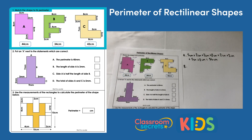Match the shape to its perimeter. We have three shapes A, B and C and we have three perimeters: 44 centimetres, 34 centimetres and 42 centimetres. I've already made a start on this question so I can talk you through the process so far and then we can carry on and get the final answers together.